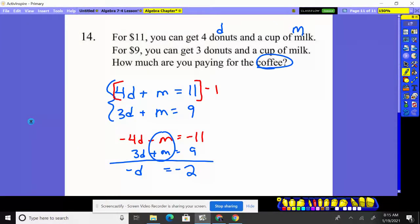If -D is -2, we multiply everything through by -1. That makes D a positive 2. So D must be 2. We now know that donuts cost $2.